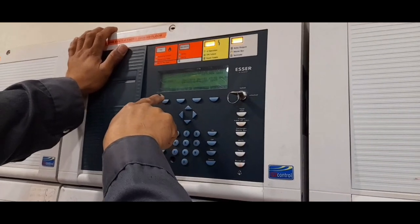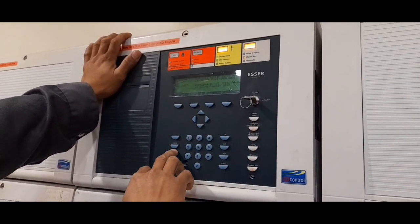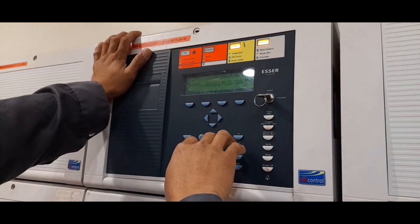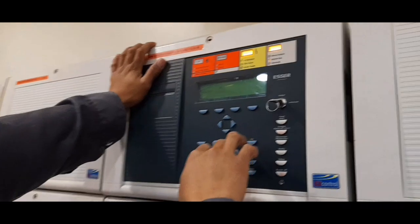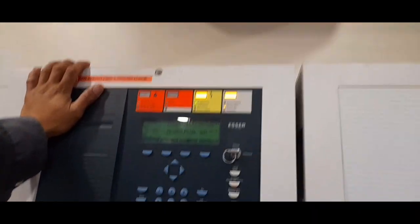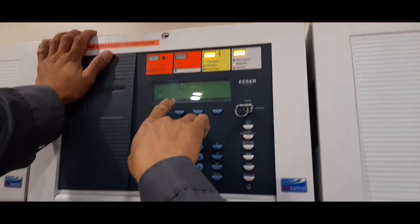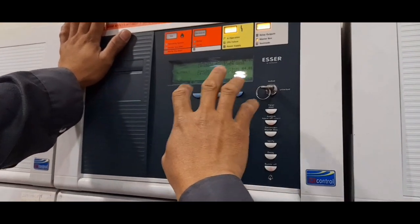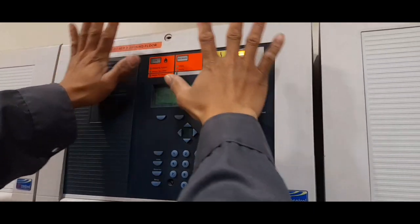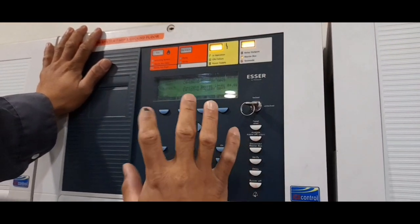We can see the overview of the system. If some device is disabled and there is an alarm, after you enable, the alarm comes here in the panel.